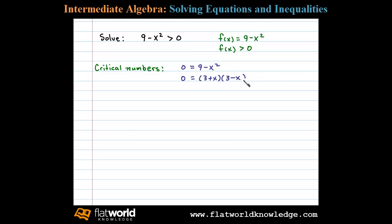Setting each factor equal to 0, we can see that there'll be two critical numbers. 3 plus x equals 0 or 3 minus x equals 0. X equals negative 3 or negative x equals negative 3, x equals 3. So there are two critical numbers here, two roots: x equals plus or minus 3.